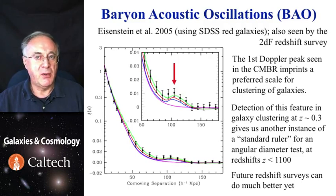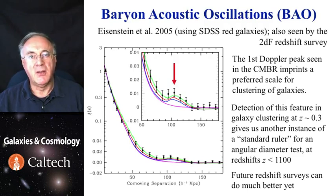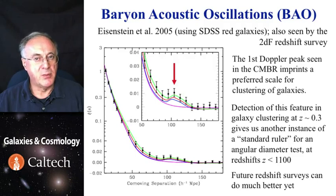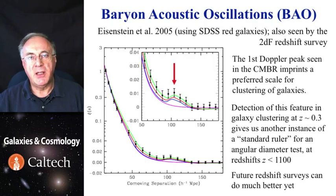Essentially, what that means is the error ellipses now rotate, and from multiple measurements, you can deduce a lot about geometry even without resort to other measurements like supernovae. Now there are many efforts aimed to do precisely this: to observe the slight excess of clustering corresponding to the first Doppler peak in the microwave background at a range of redshifts, and that can constrain cosmological parameters even better.